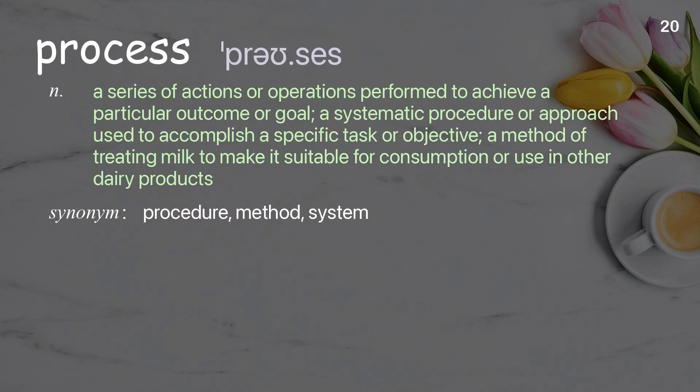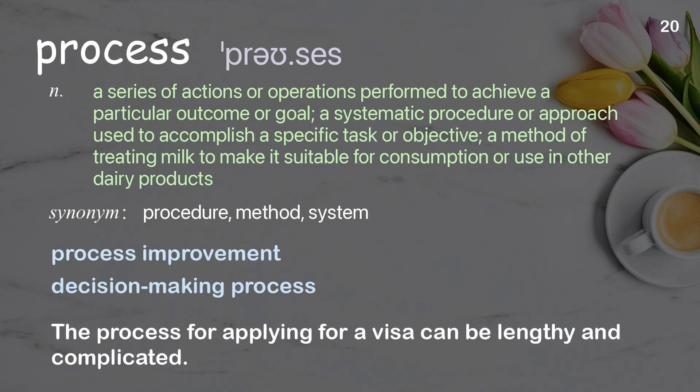Process: A series of actions or operations performed to achieve a particular outcome or goal; a systematic procedure or approach used to accomplish a specific task or objective. Example: The process for applying for a visa can be lengthy and complicated.